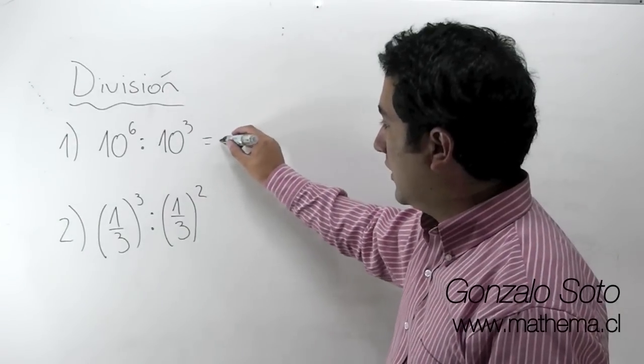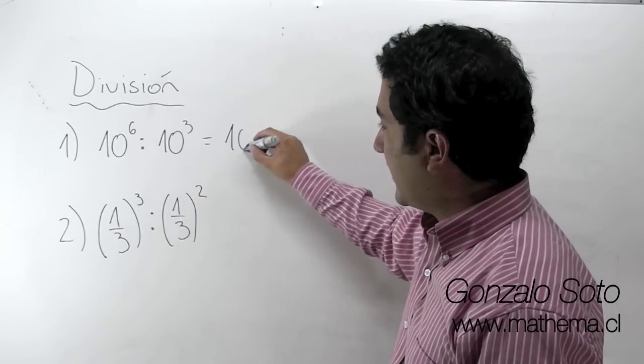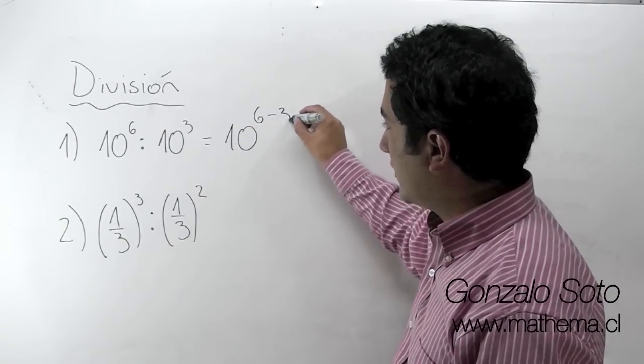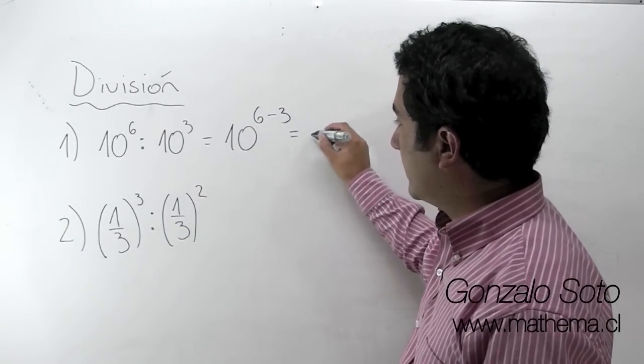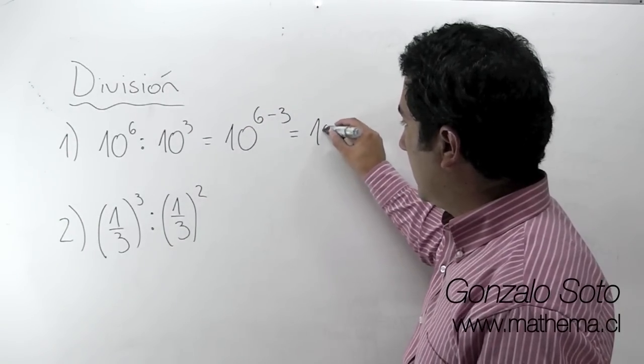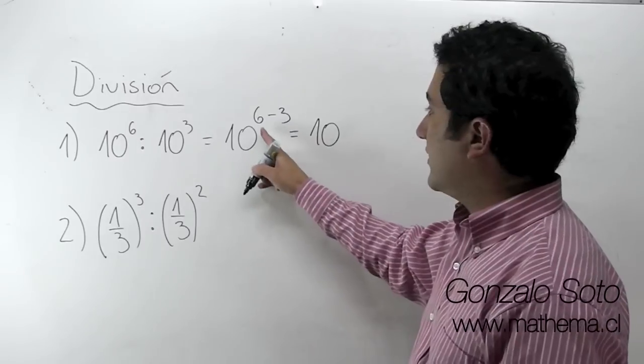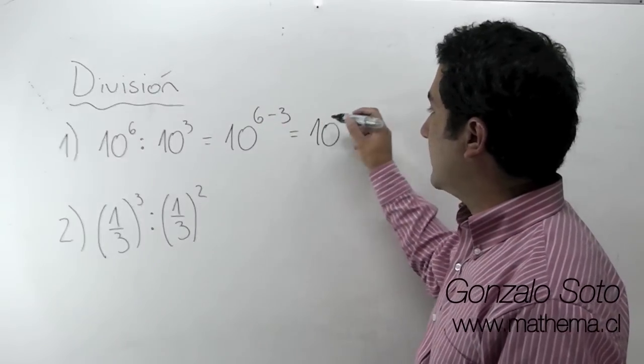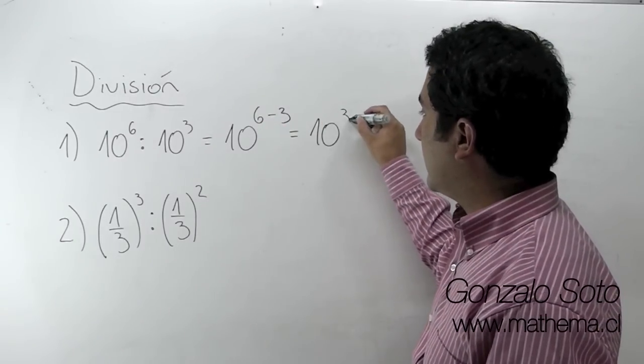Entonces tenemos, conservamos la base y restamos los exponentes. La base es 10, 6 menos 3 es 3.